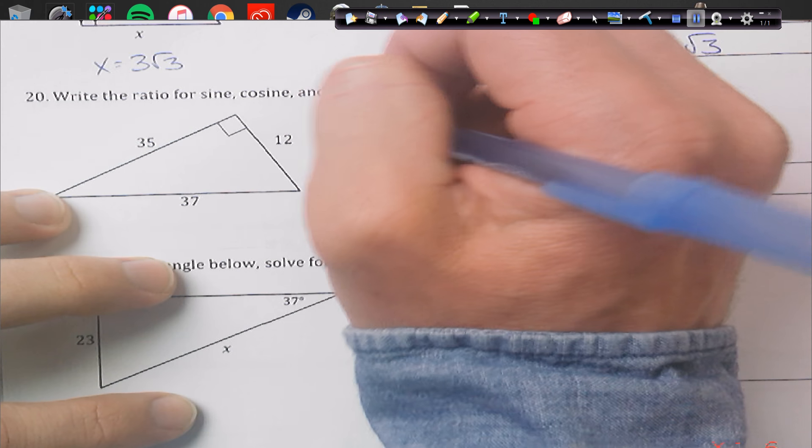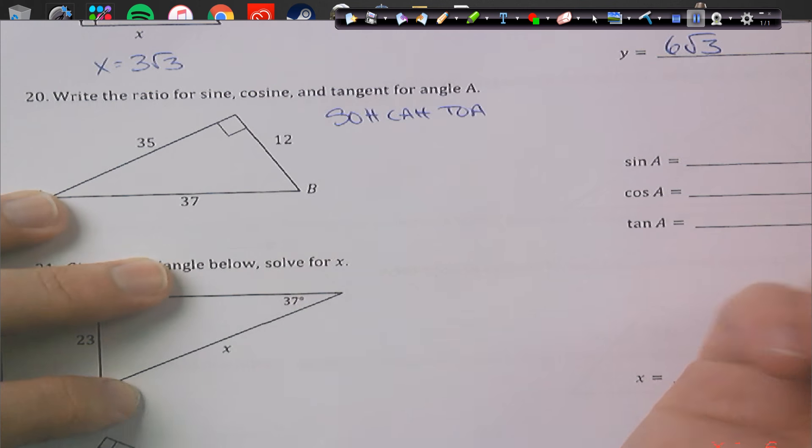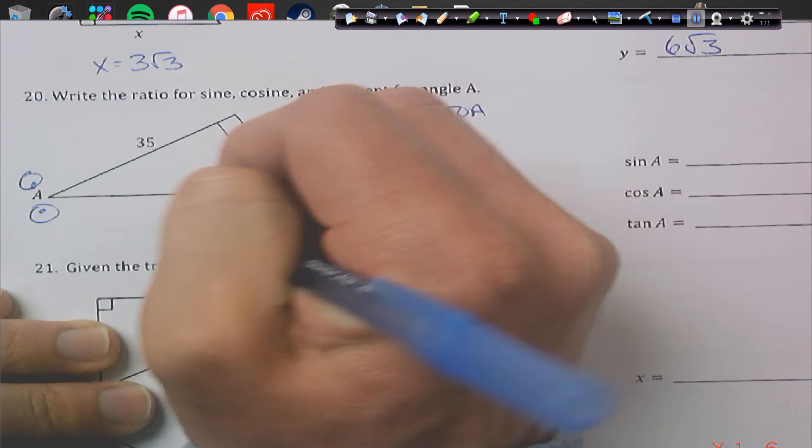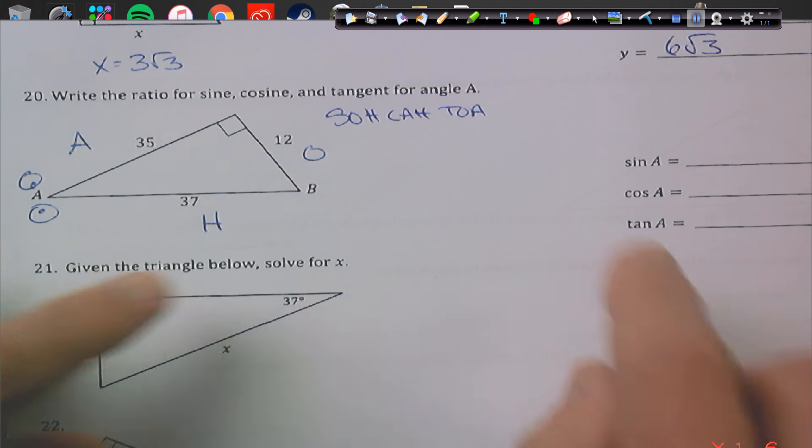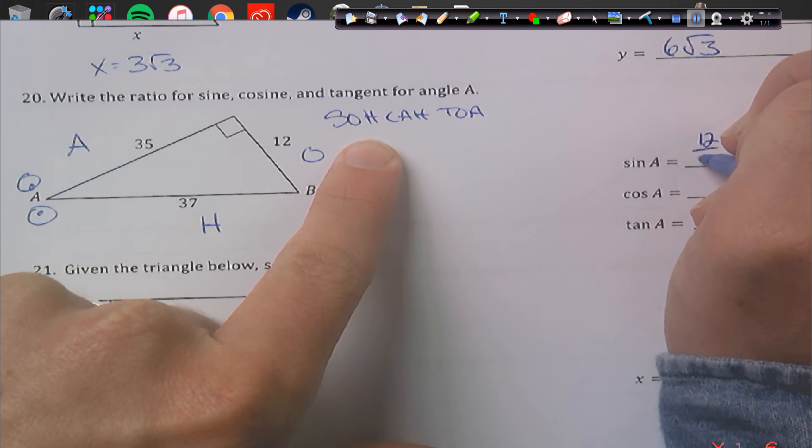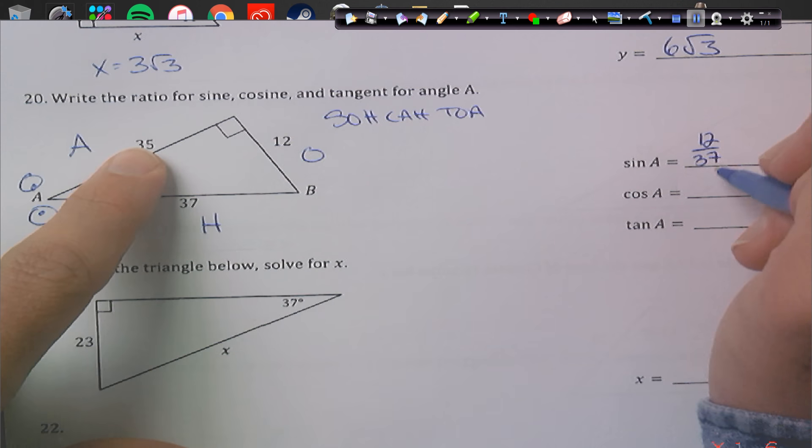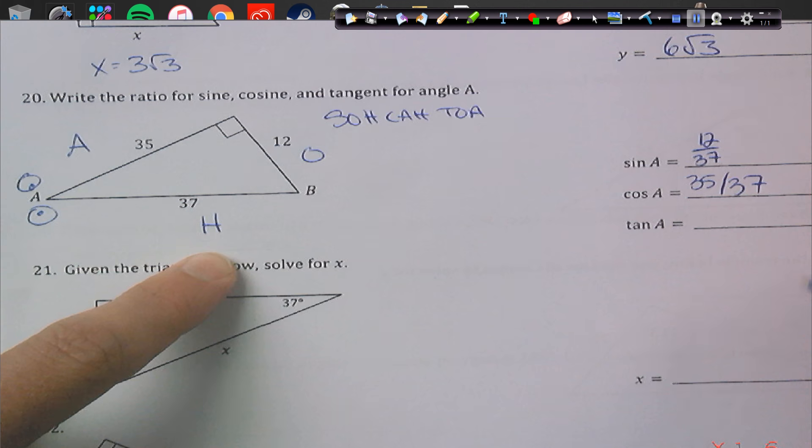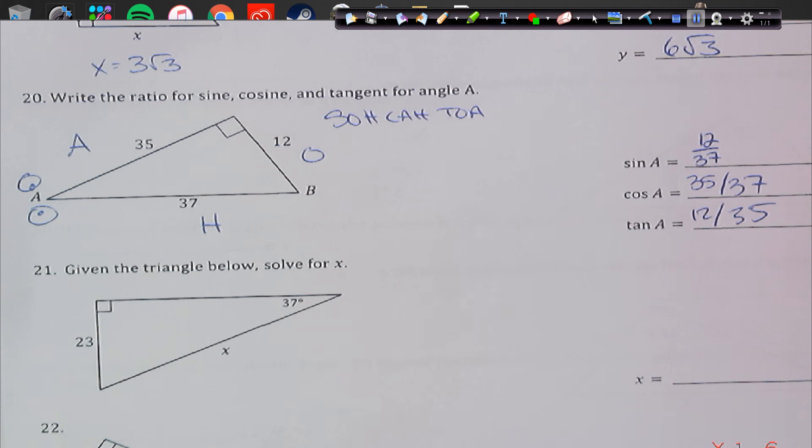We got SOH CAH TOA. All right. And we're going from A. So, there's my googly eyes. We have O. H for hypotenuse, O for opposite, and A for adjacent. It's right next to it. And let's go ahead and do our ratios. Pretty easy. SOH CAH TOA is opposite over hypotenuse. 12 over 37. Then, cosine is going to be adjacent over hypotenuse. 35 over 37. And then, we're going to get opposite over adjacent. Notice all three are different ratios.